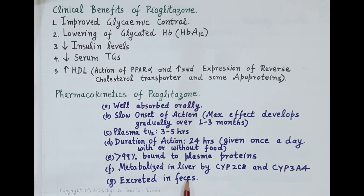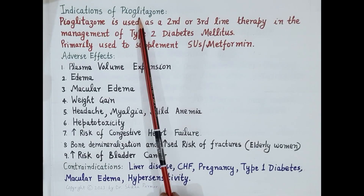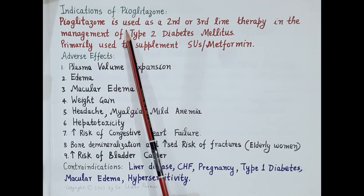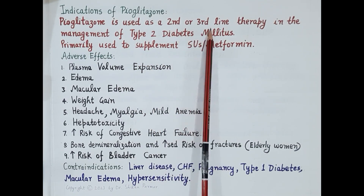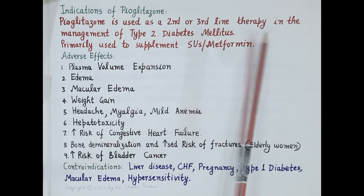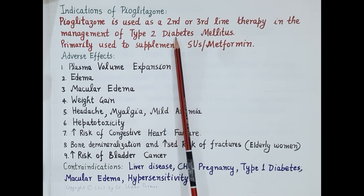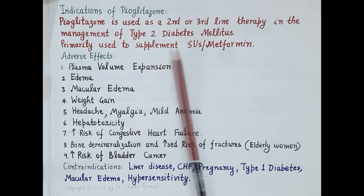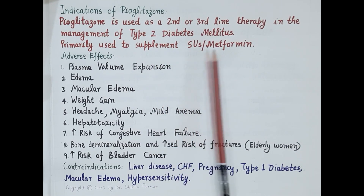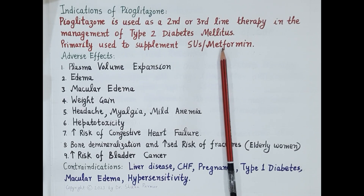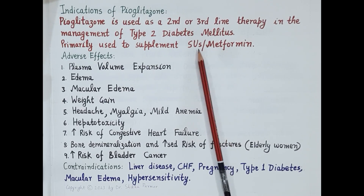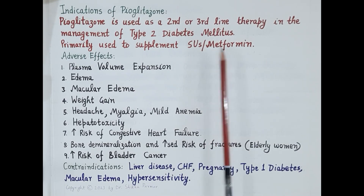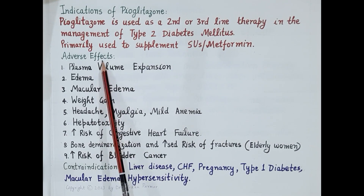Regarding indications, pioglitazone is an oral anti-diabetic drug used as second-line or third-line therapy in the management of type 2 diabetes mellitus. Primarily, pioglitazone is used to supplement sulfonylureas or metformin — that means it is used in combination with sulfonylureas or metformin.